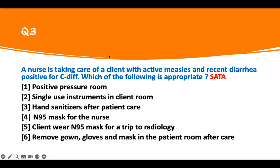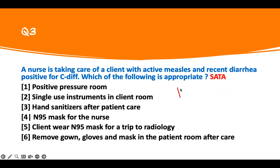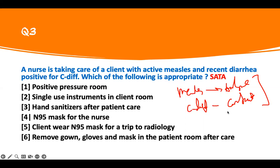And lastly, this is the same thing but I modified it to select-all-that-apply. Which of the following is appropriate? The nurse is taking care of a client with active measles and recent diarrhea, positive for C. diff. What is being asked is which one is appropriate. The patient has measles and also has C. diff — those are the buzzwords. Measles is airborne. And the patient has C. diff — so I have a contact issue also. Therefore, all things associated with airborne and contact, I will do.